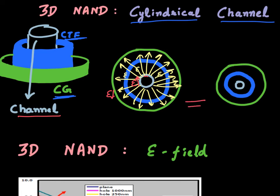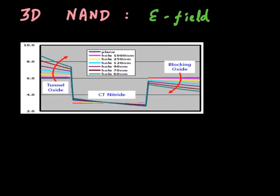This effect gets even more exaggerated as you shrink your channel hole size, which you may need to do to pack more memory on the same die. What happens is that the field lines become even more concentrated towards the center of the cylinder. As you shrink it more, the channel in the middle essentially starts to resemble a point source, and the electric field lines around that channel become even more dense, giving even higher electric field towards the center of the cylinder.